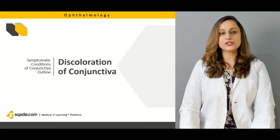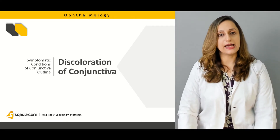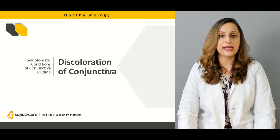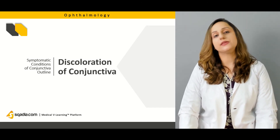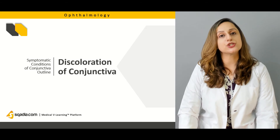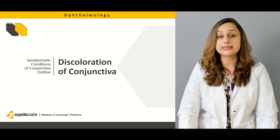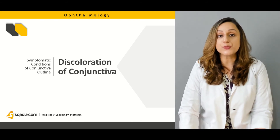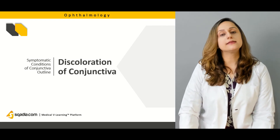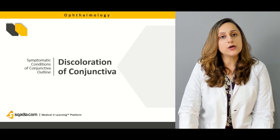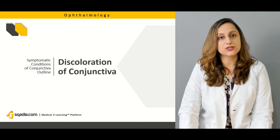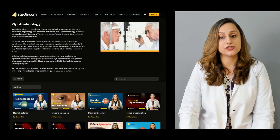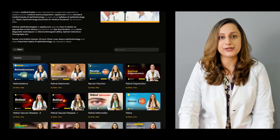Discoloration of the conjunctiva will also be discussed, including red, blue, yellow, and even brown pigmentation of the conjunctiva. What do these signs indicate? How do we interpret these signs, and how do we go about investigating these cases of discoloration of the conjunctiva?